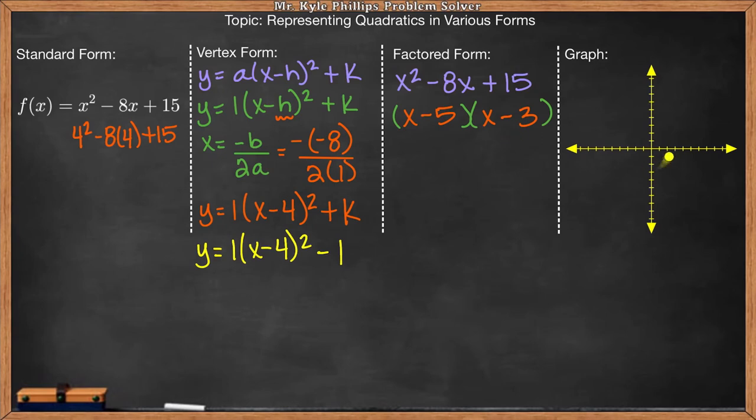Now they want us to plot this quadratic. So the easiest way to plot is to use the vertex form to plot your vertex. So here we got 4 as our x value and negative 1 as our y value. So I'm going to start here and I'm going to go over 4 and down 1. So there's my vertex.